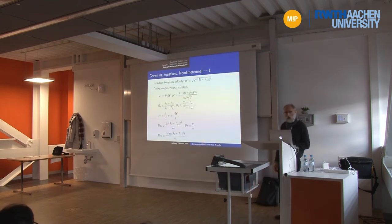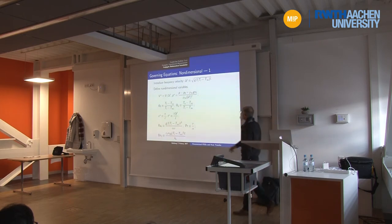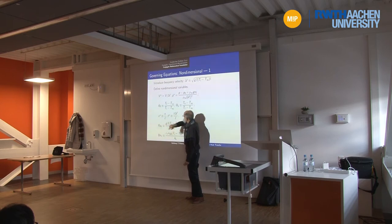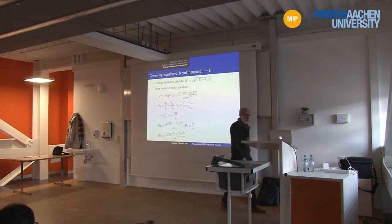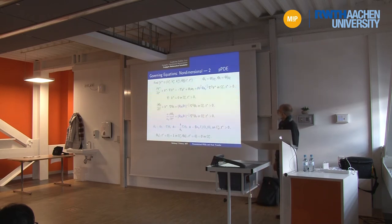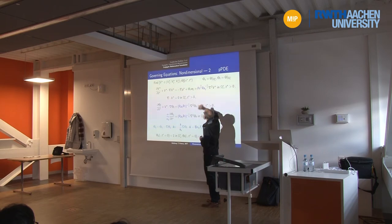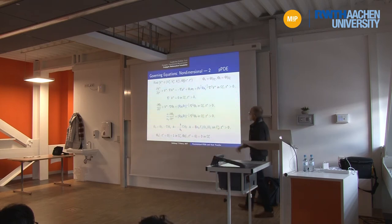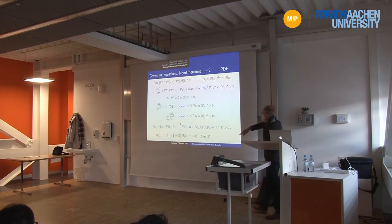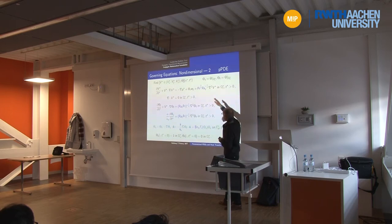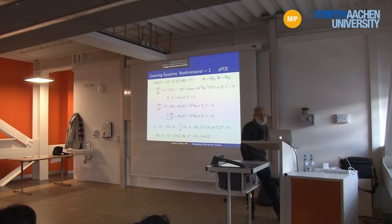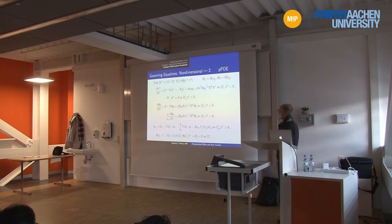We make the equations look nicer—though no easier to solve—by non-dimensionalization. Capital theta is the non-dimensional temperature. Ra is the Rayleigh number, measuring the importance of buoyancy and the strength of the flow and effectiveness of heat transfer. In non-dimensional form, the parameters are Prandtl, Rayleigh, conductivity ratio, and thermal diffusivity ratio—five parameters including the radiation term. This is now a parametrized PDE with five parameters. I will use blue to highlight parameters throughout.